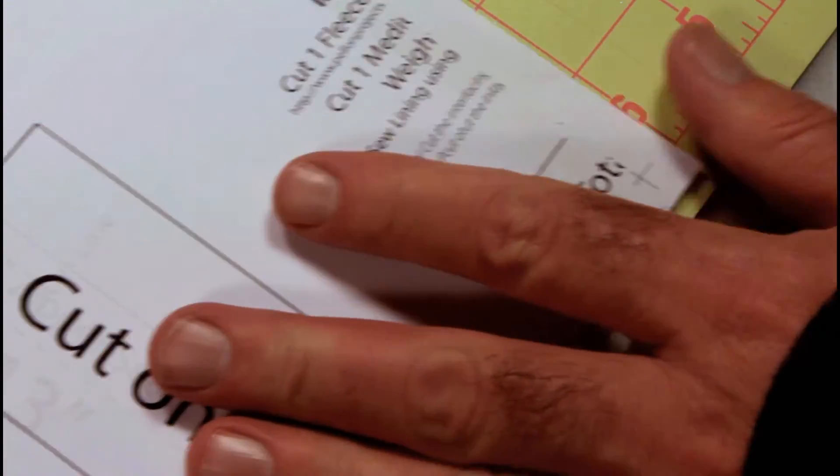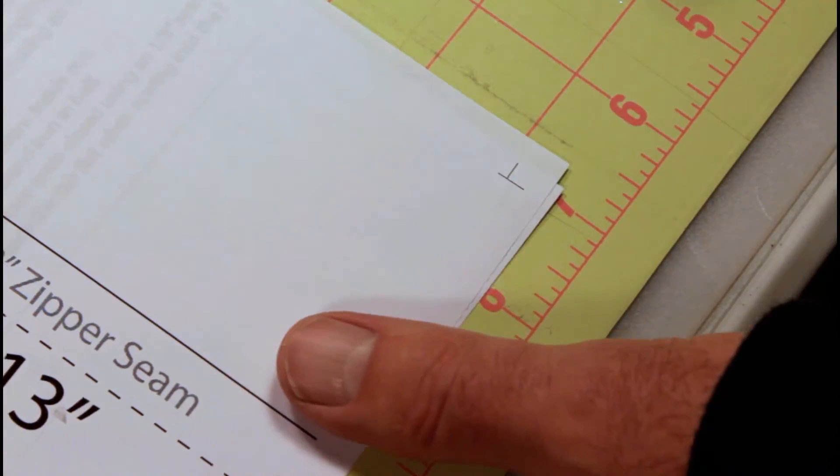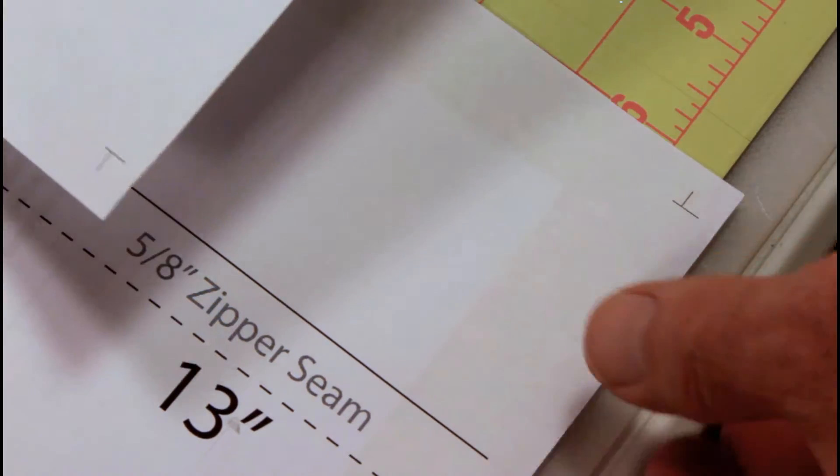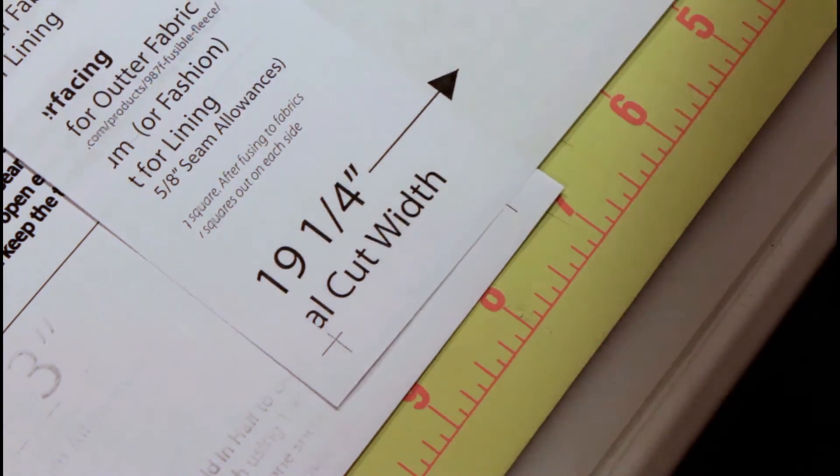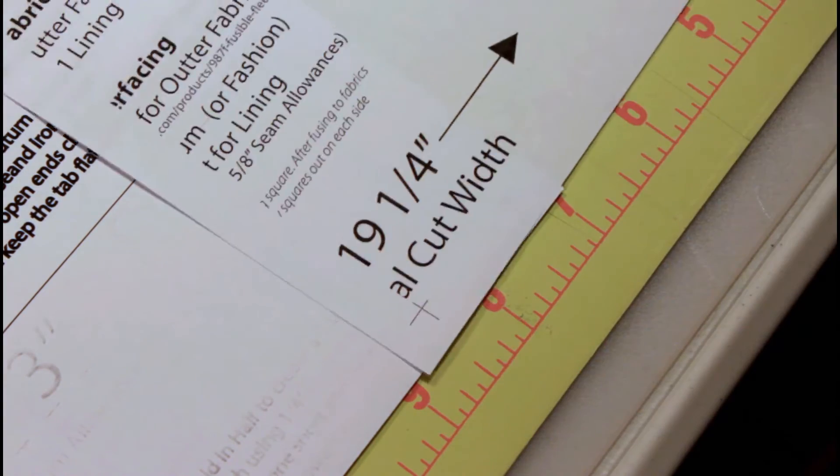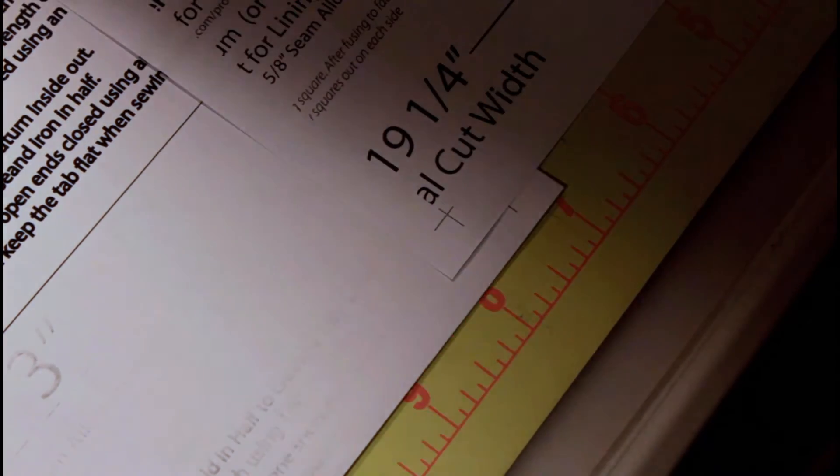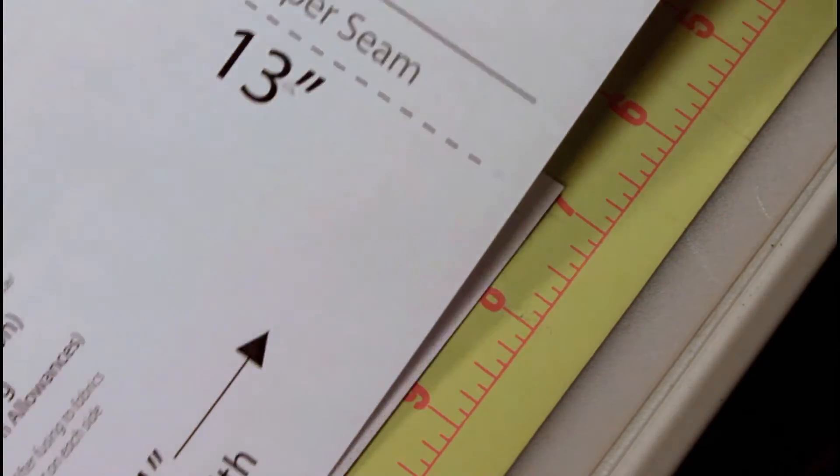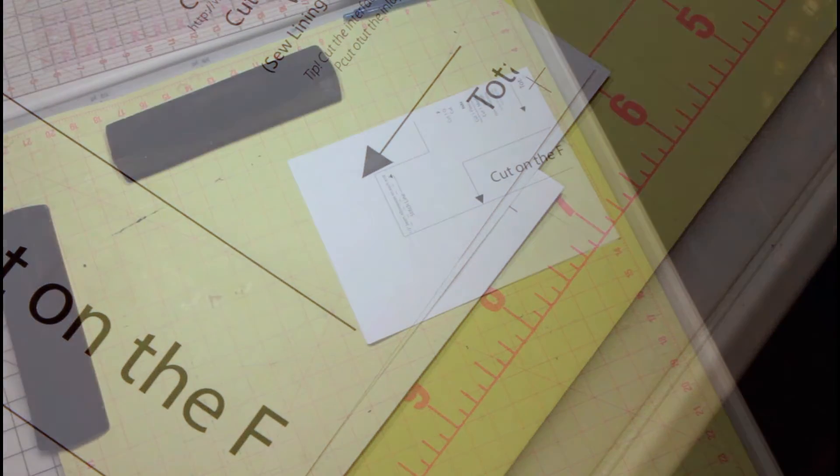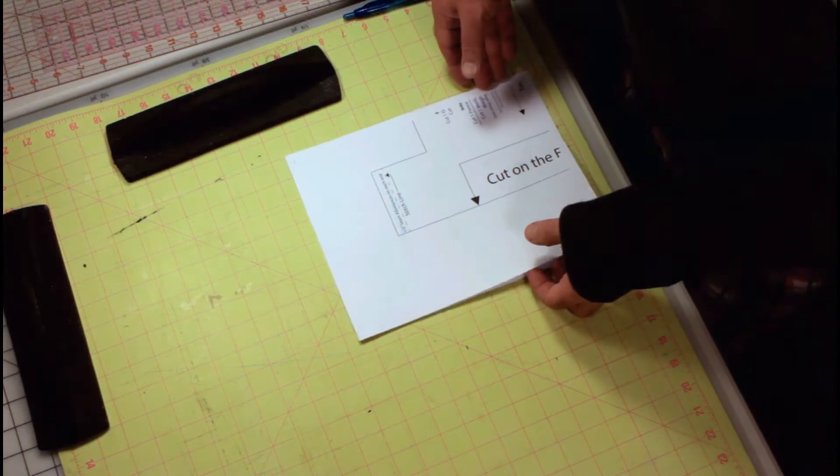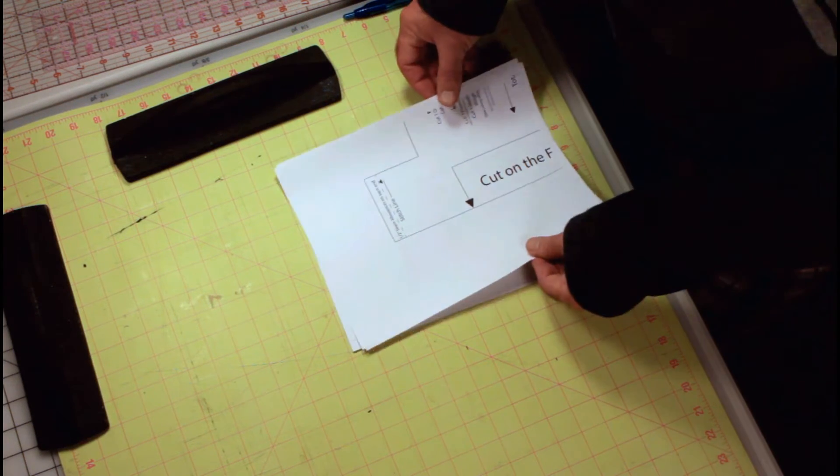You're going to do that on each page. So this is the first page, you'll see the alignment mark here on the second page where it's down here. You'll do the same thing along this line and just alternate each of the four corners on the pages.